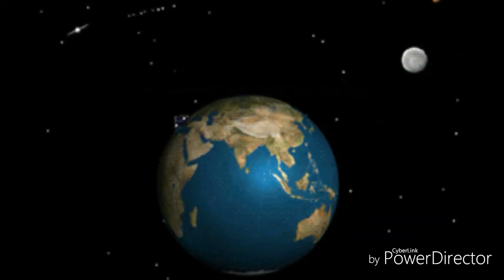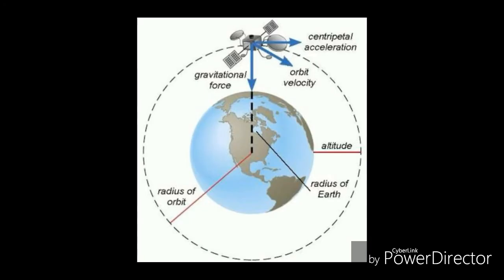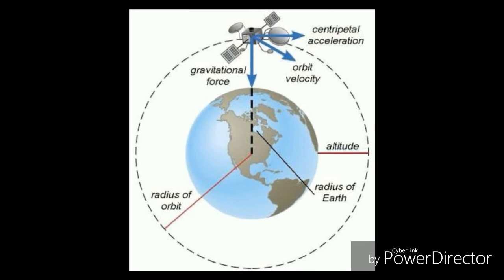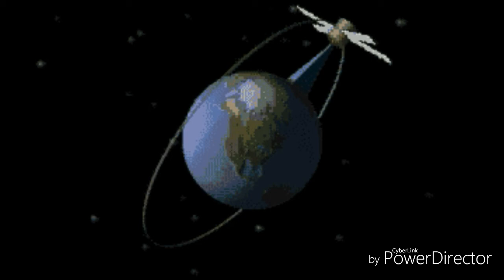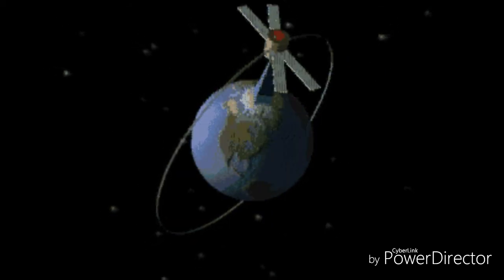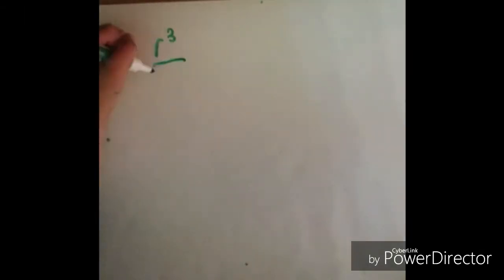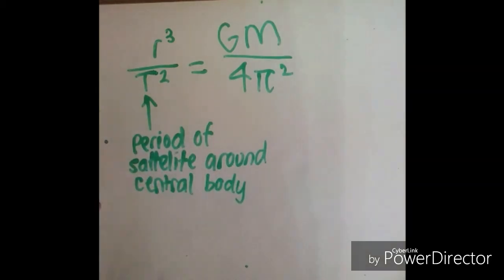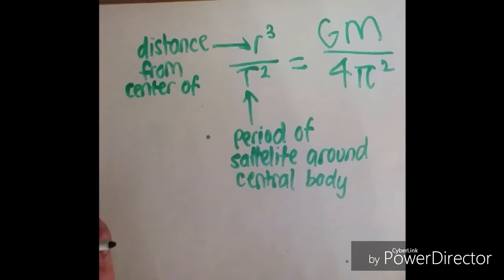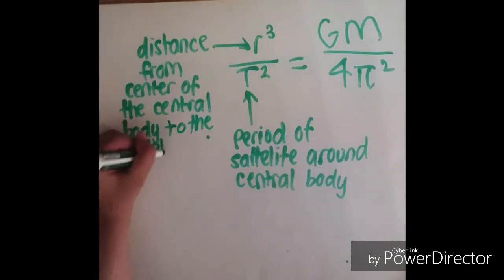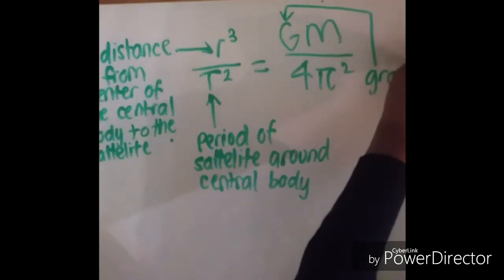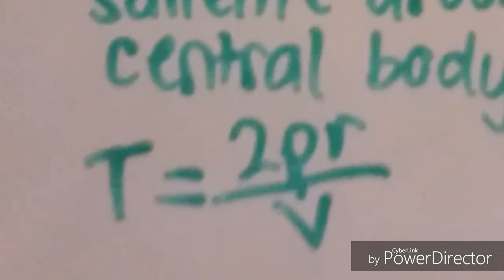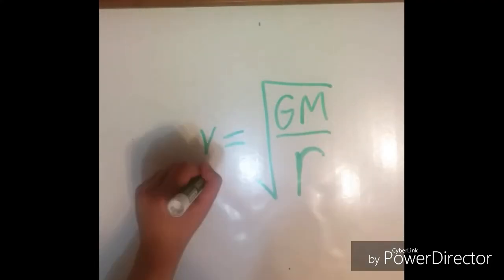To achieve and maintain a stable orbit around a planet, a satellite must have a certain velocity. The orbital velocity is defined as the velocity required by a satellite to enter and maintain a particular orbit around a celestial object. If we assume the orbit is circular, we can use Kepler's third law to obtain an equation for the orbital velocity, where T equals the period of the satellite around the central body, r equals the distance from the centre of the central body to the satellite, m equals the mass of the central body, and g is the gravitational constant. Substituting T = 2πr/v and solving, we obtain the orbital velocity v of the satellite.